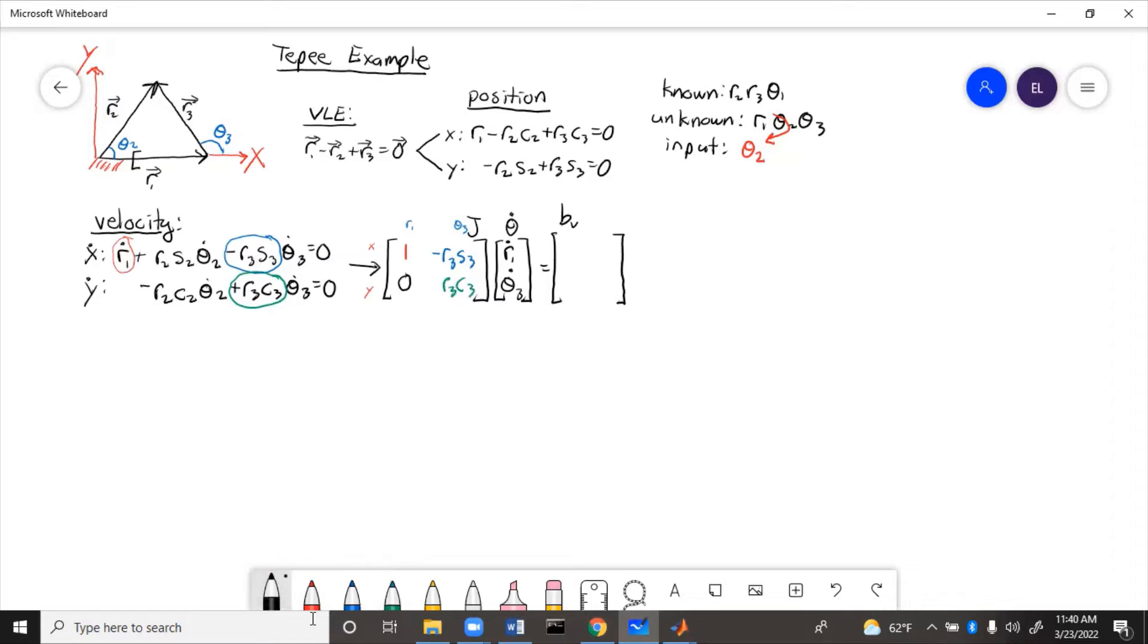So now the B matrix just has everything else, which in this case is the theta 2 dot stuff because that was the input. And because we move that stuff to the other side of the equals, the sign will change. So this is velocity.